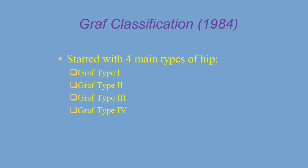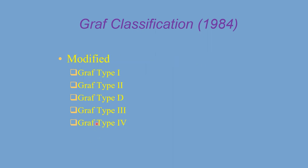According to the Graf classification, there are four types of hip: type 1, type 2, type 3, and type 4. This was later modified by introducing Graf type D, which we will explain further.